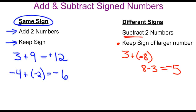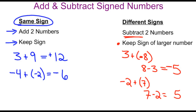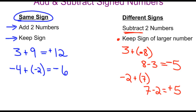Let's try another example. If we had negative 2 plus a positive 7, again we're going to subtract the two numbers. 7 minus 2 is 5, and the larger number is 7, which is positive, so we will keep the positive sign, and our answer will be positive 5.